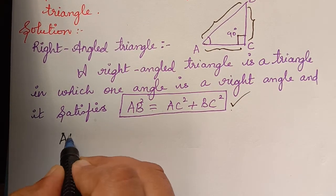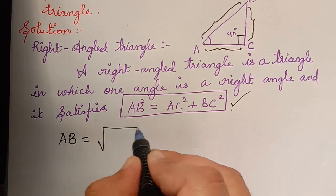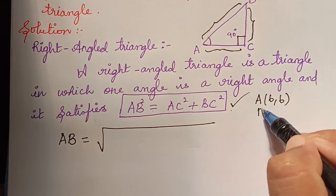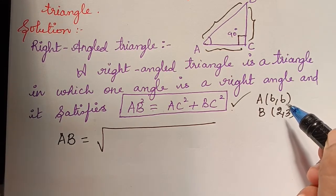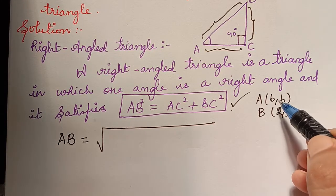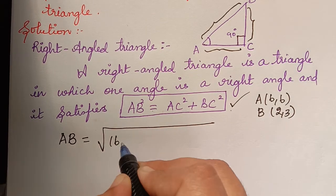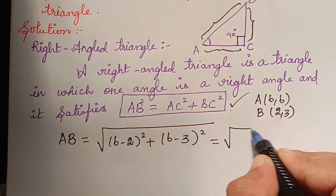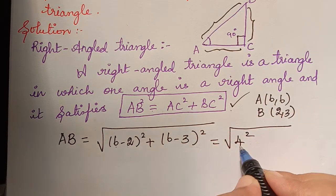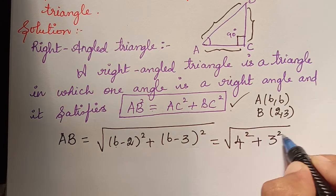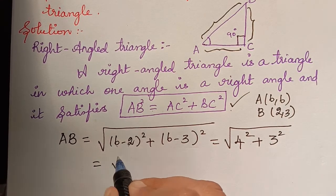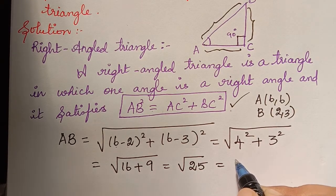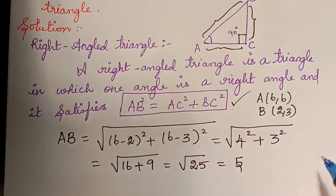AB will be equal to the square root of: A is 6,6 and B is 2,3. Using the distance formula, AB = √((6−2)² + (6−3)²) = √(4² + 3²) = √(16 + 9) = √25 = 5. So AB is equal to 5 units.